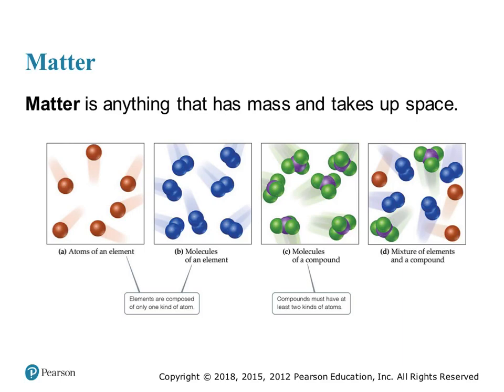There are seven diatomic elements on the periodic table. We remember them using the acronym Brinkelhoff: Br for bromine, I for iodine, N for nitrogen, Cl for chlorine, H for hydrogen, O for oxygen, and F for fluorine. Brinkelhoff.